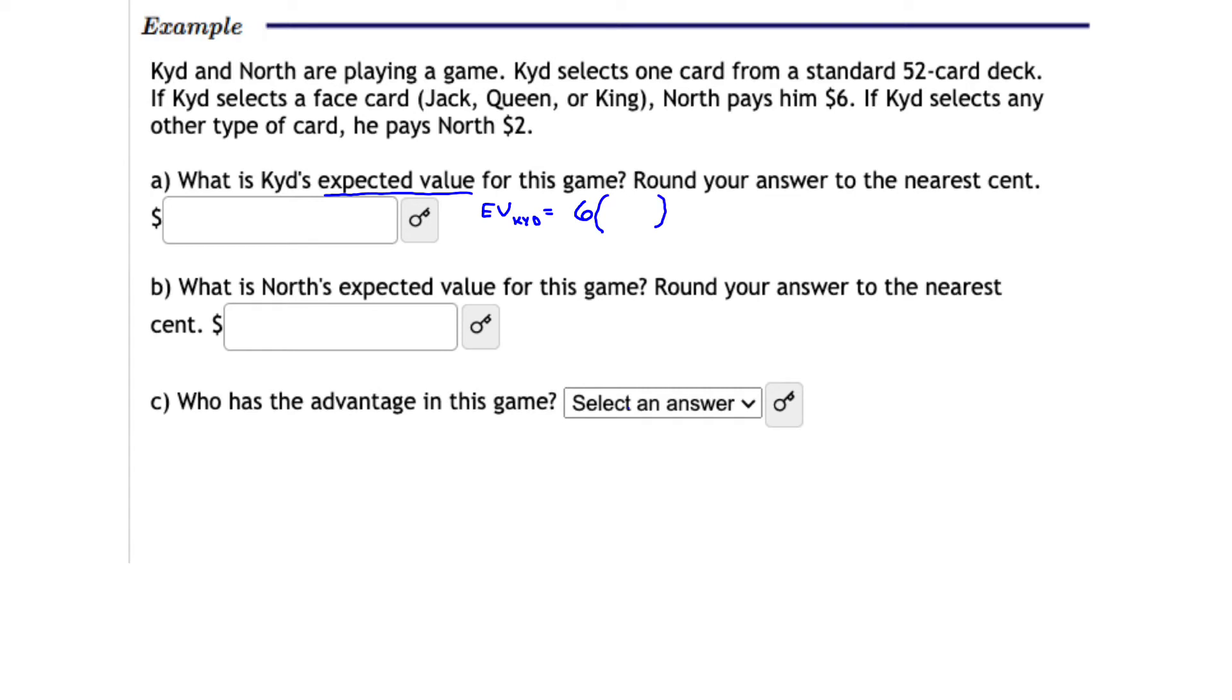Now what's the probability of getting a face card? There are 3 different types, Jack, Queen, and King, and 4 suits. So that means there's a total of 12 face cards in a deck of 52. So the probability of choosing a face card in a deck of 52 cards is 12 over 52. This would represent the winning part of the expected value in terms of Kid's perspective.